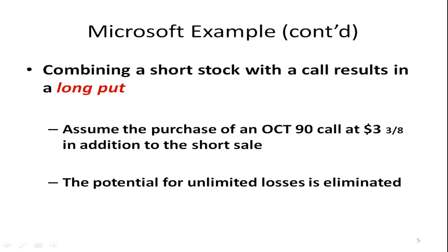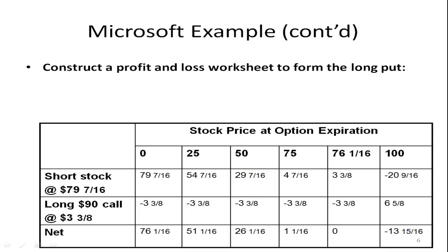Now if you combine the short stock with a call option, you get a payoff picture that looks like a long put. For example, we're going to assume that you purchase an October ninety call option. That means the option expires in October and has an exercise price of ninety, and you're paying three and three-eighths for this in addition to your short sale. What's going to happen is you're going to eliminate the unlimited possible losses. A good way to see that is to construct a worksheet with the payoffs.